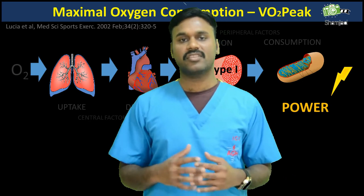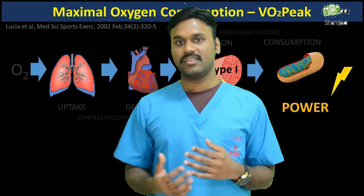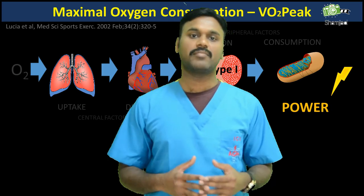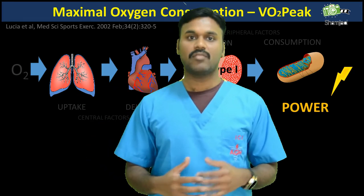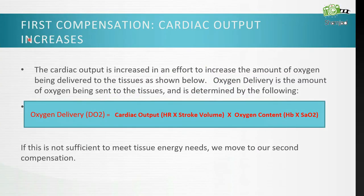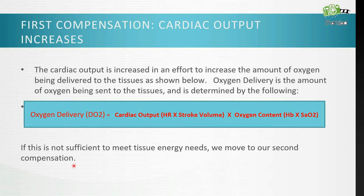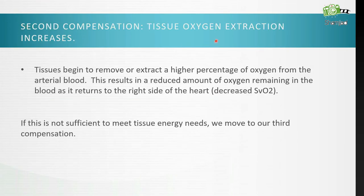Energy is needed for cell function and survival. Tissues need oxygen to make ATP. If the oxygen received by tissues falls below requirements, the body compensates. First compensation: cardiac output increases — heart rate times stroke volume — in an effort to increase oxygen delivery to tissues. Oxygen delivery (DO2) equals cardiac output multiplied by oxygen content, which is hemoglobin times oxygen saturation. If this is not sufficient to meet tissue energy needs, we move to the second compensation: tissue oxygen extraction increases.